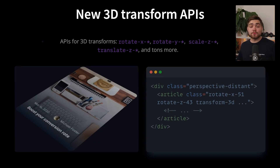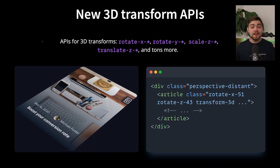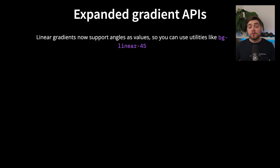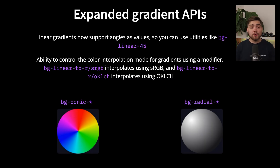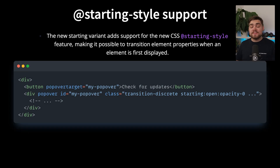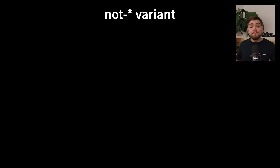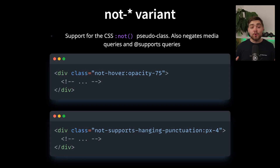There are new APIs for 3D transforms like rotate, scale, translate, perspective, and tons more. There are new gradient features like linear gradient angles — which came with the renaming of background-gradient to background-linear — along with gradient interpolation modifiers, and new background-conic and background-radial utilities. There's a new @starting variant that adds support for the CSS starting-style feature, making it possible to transition element properties when an element is first displayed. There's also a new not variant, which finally adds support for the CSS :not pseudo-class as well as negating media queries and support queries.